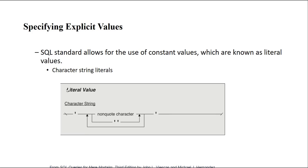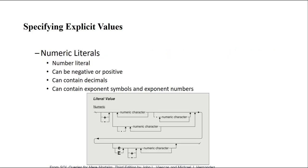This is a general rule — you can use multiple character string literals together. You place a single quote at the front and at the end, then non-quoted characters in between, or combine different literals. You can also add numeric literals, which are exact numeric values — they can be positive, negative, have a decimal, or have an exponent.